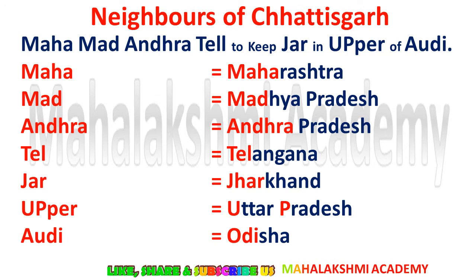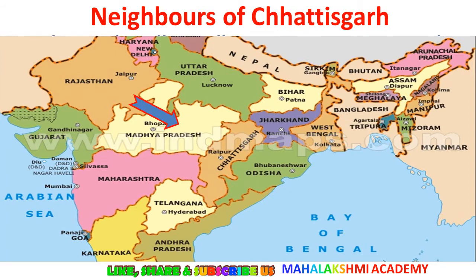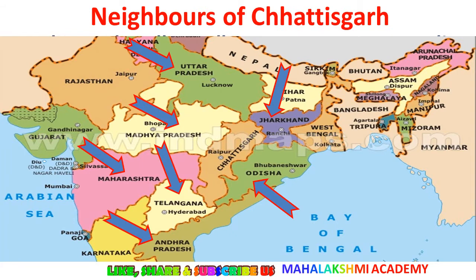Now let's move to the map. We can see Chhattisgarh in a light orange color. The states sharing its boundaries are: Madhya Pradesh, Maharashtra, Uttar Pradesh, Odisha, Jharkhand, Andhra Pradesh, and Telangana. These are the regions sharing boundaries with Chhattisgarh.